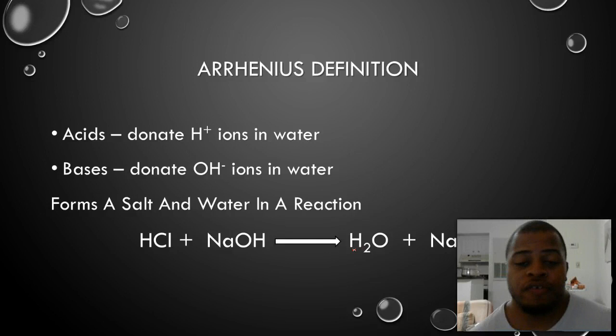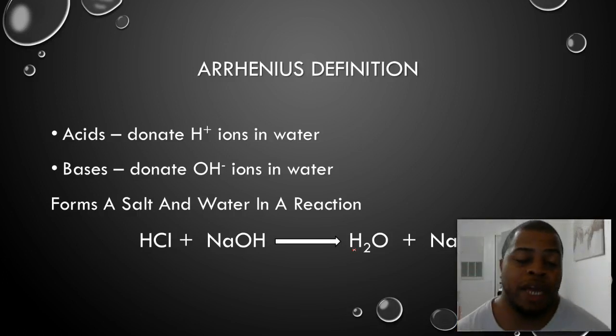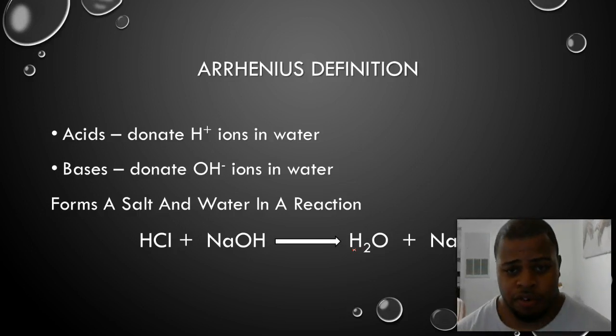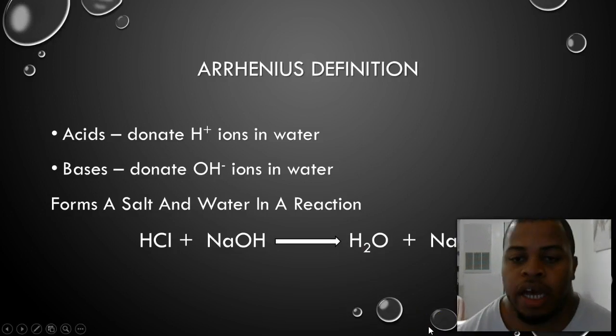We have a couple different definitions that we use for acids and bases. The first one is saying that acids donate hydrogen ions in water, or H+. Whereas, bases are going to donate hydroxide ions in water. When we have a basic understanding of acid-base reactions, we know that it's usually going to produce water, which you see here, as well as a salt.